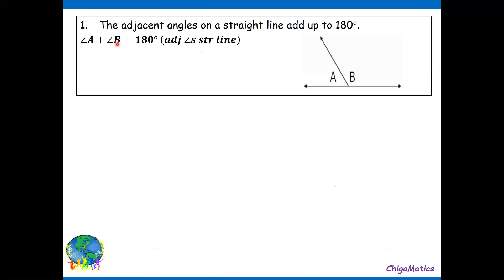To start with, the adjacent angles on a straight line add up to 180 degrees. So angle A plus angle B gives us 180.